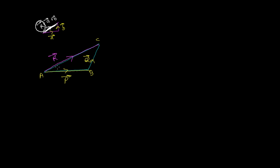The resultant R makes angle beta with vector P. If we elongate the line AB (the vector P direction), we get a certain angle theta between vectors P and Q. Let's say theta is the angle between vector P and Q. I'm going to do a little construction — I'll draw CD perpendicular to AD.